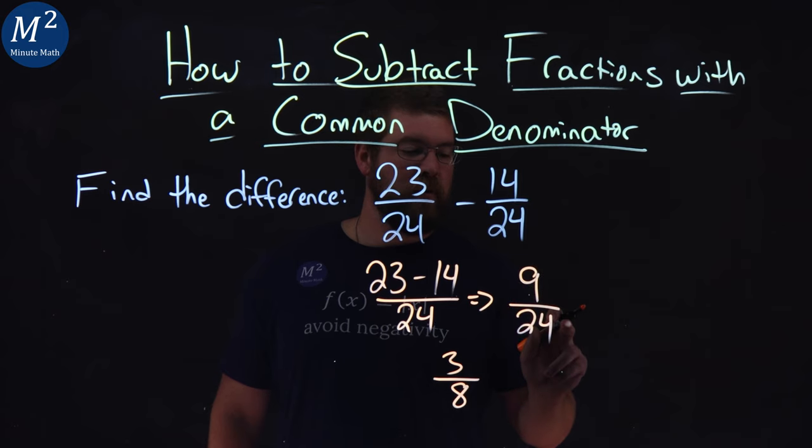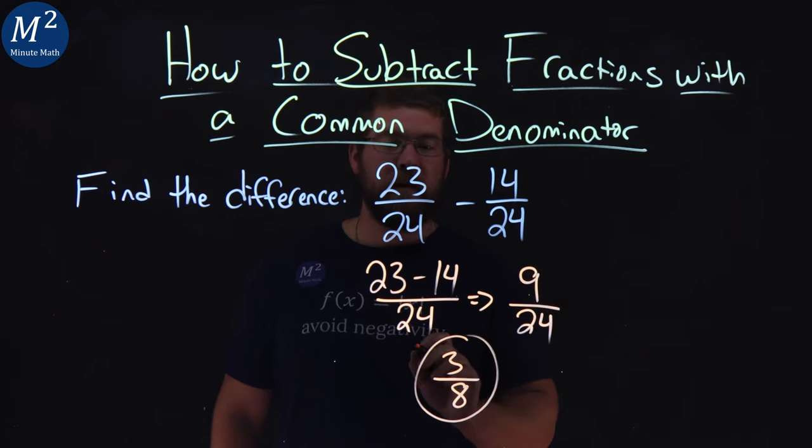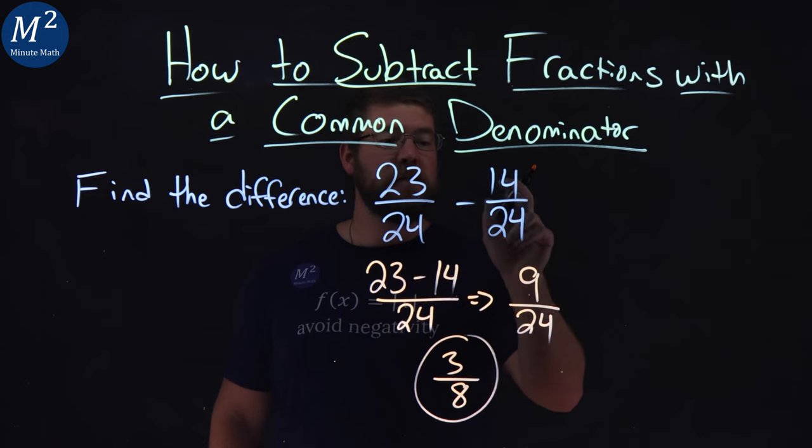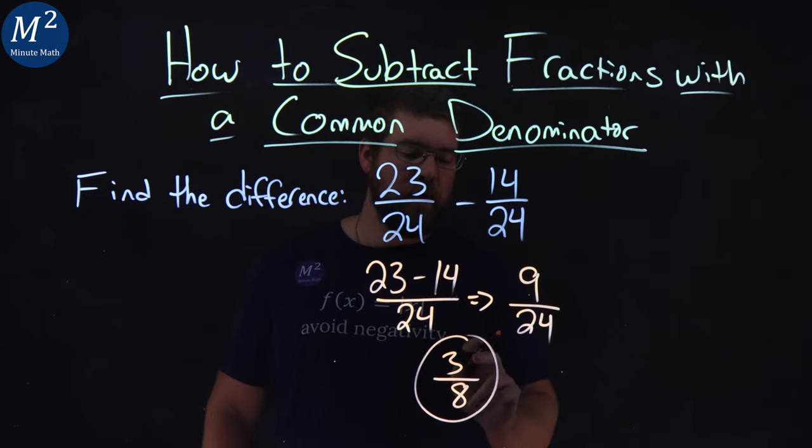So 9 over 24 simplifies to be 3 eighths, and there we have it. 23 over 24 minus 14 over 24 comes out to be 3 eighths.